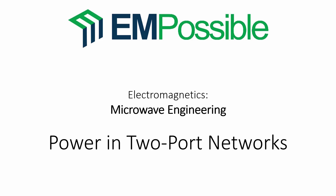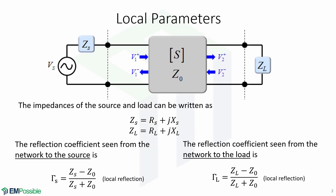Hello and welcome to the Microwave Engineering Lecture titled Power in Two-Port Networks. Here is a schematic of a two-port network with scattering parameters, a characteristic impedance Z0 connected in between a voltage source with some impedance and a load impedance.